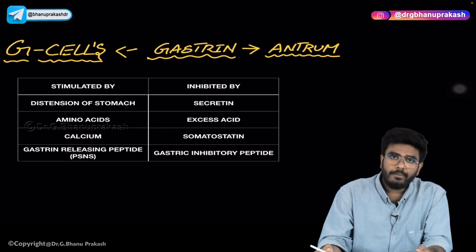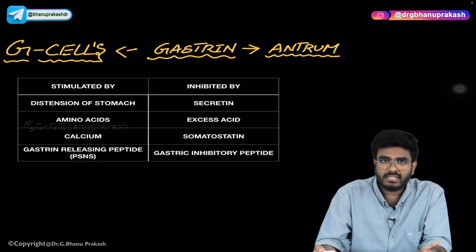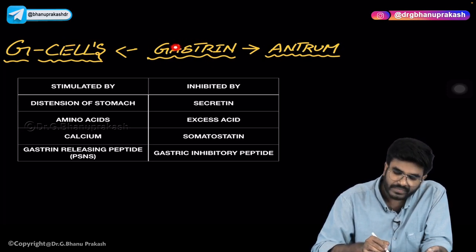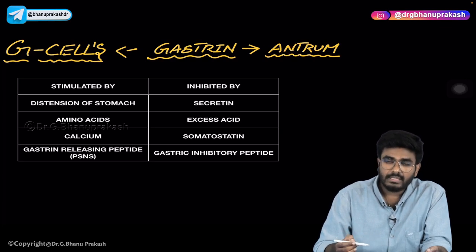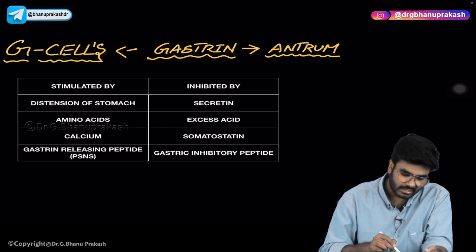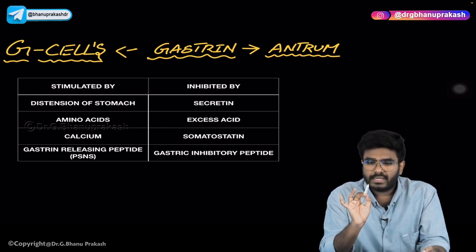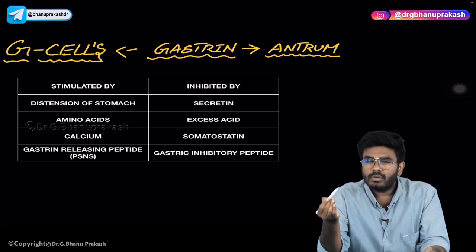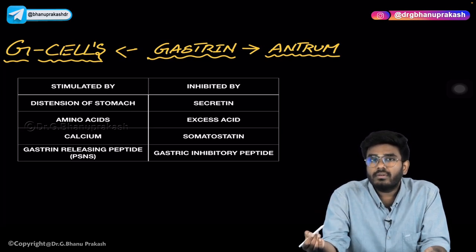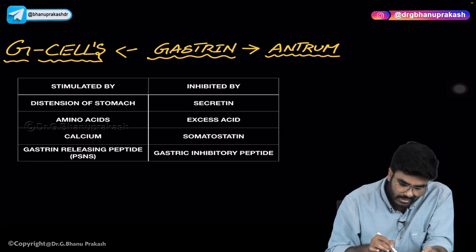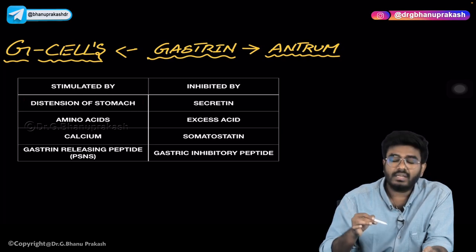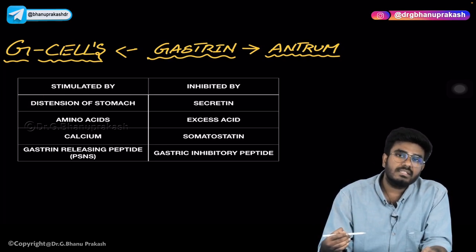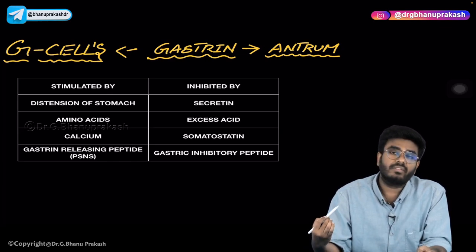Let's have a summary about gastrin. G cells from the gastric gland produce gastrin, which acts on the antrum of the stomach to help in acid production. Gastrin release is stimulated by: distension of the stomach — when you take food, the stomach distends, activating G cells which produce gastrin, which then acts on parietal cells to produce acid. Amino acids in the food and calcium also play a role in gastrin production.